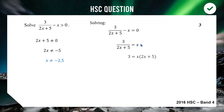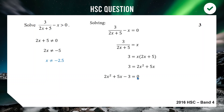Multiplying (2x + 5) across, expanding, and rearranging gives 2x² + 5x − 3 = 0. Factorizing gives (x + 3)(2x − 1) = 0, so our other critical values are x = −3 and x = 1/2.